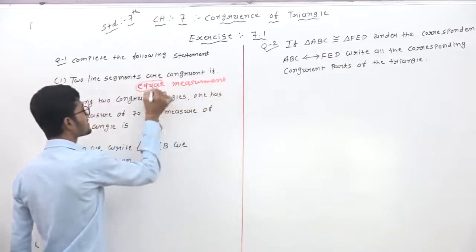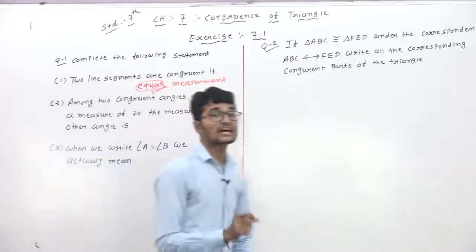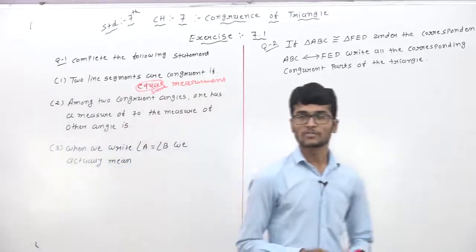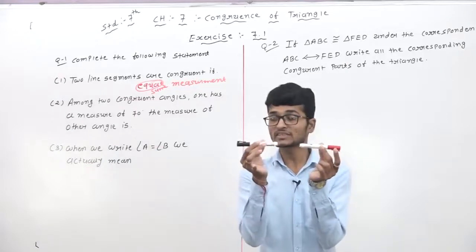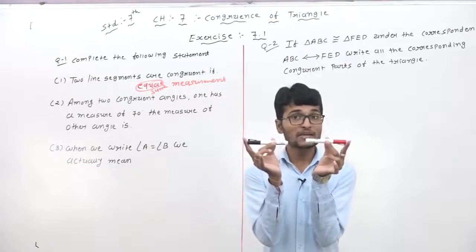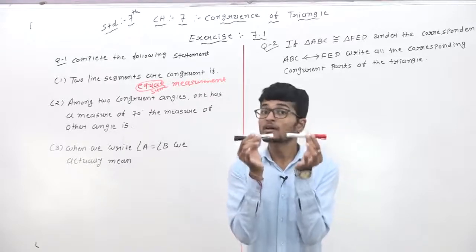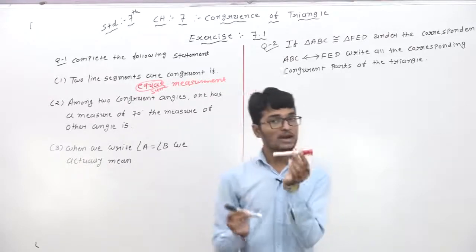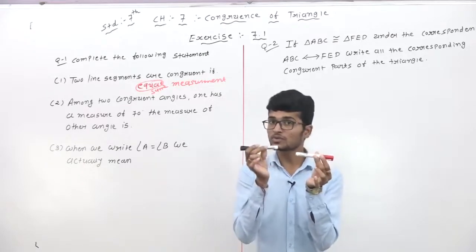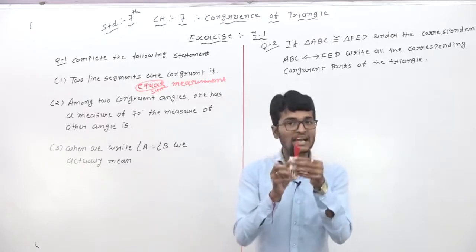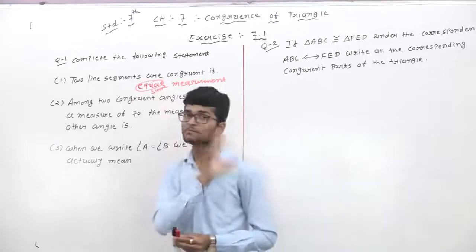Equal or same measurement — then and then these two line segments are congruent to each other. For example, one line segment is 5 cm and another is 6 cm — measurement not equal, not same, so these two lines are not congruent. But if both measure 5, these two lines are congruent. So equal measure means same measurement.